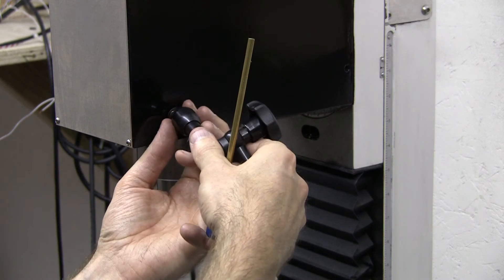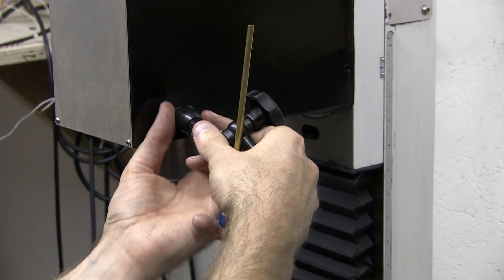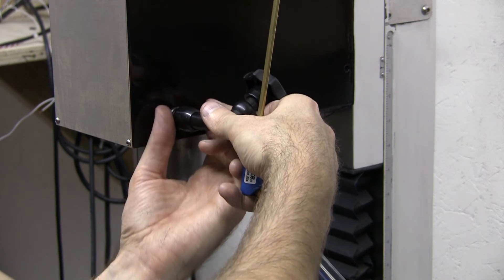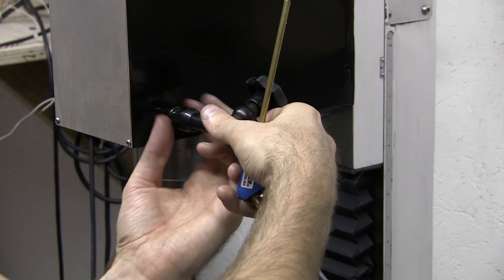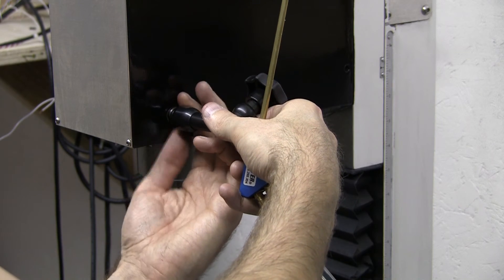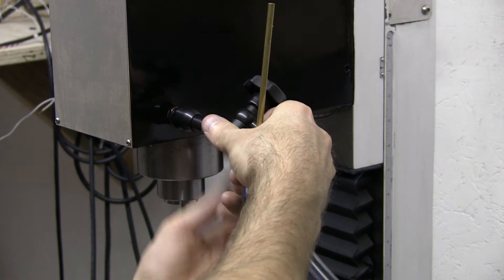A hole was drilled and threaded into the side of the mill's head. Loosen the Noga arm so that the base can be turned independently with a wrench. Install the bevel washer and then thread and tighten the base onto the mill.